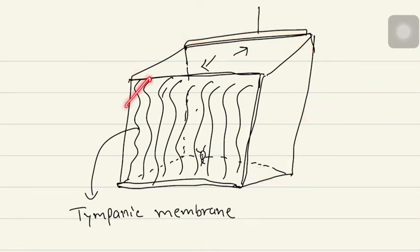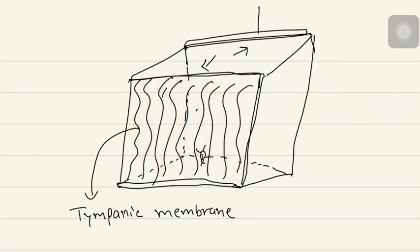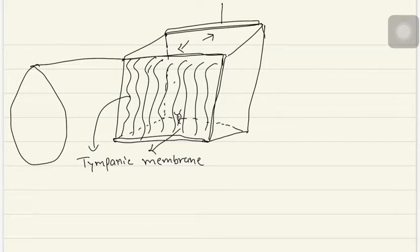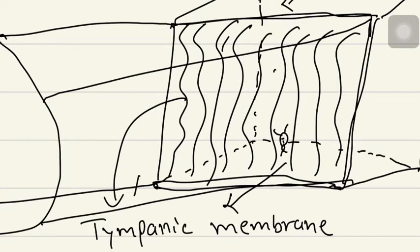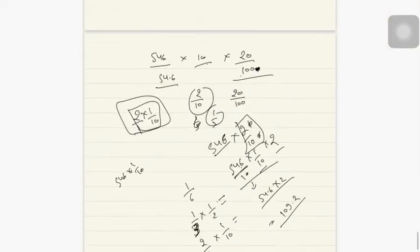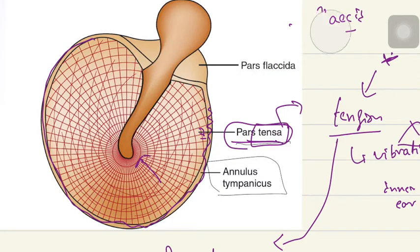Starting with the lateral wall — here we are saying it is the tympanic membrane. Let me come out from this room and watch this lateral wall, or the tympanic membrane, while standing in the external auditory canal. This is our external auditory canal, and we are standing here watching this tympanic membrane. This is what we will be looking at — this is our tympanic membrane.